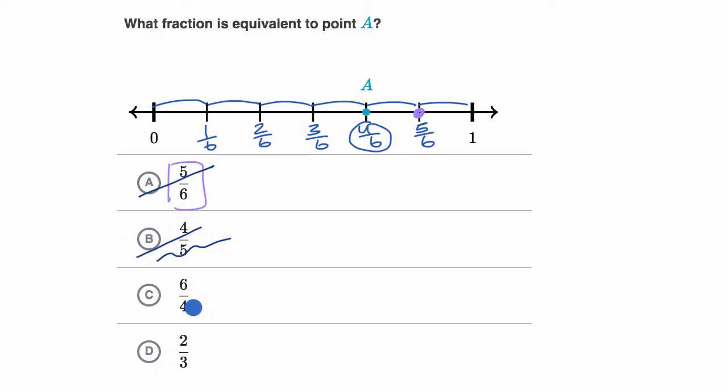Now, what about six fourths? Well, one way to think about it is four fourths would be equal to one. So six fourths is going to be beyond one. So it's definitely not going to be where A is. So I could rule that one out. And we could say, well, maybe it's just going to be D. But let's make sure that this makes sense.